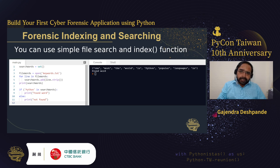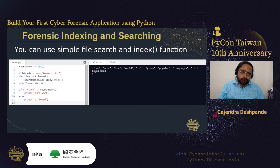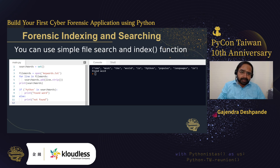The next topic is forensic indexing and searching. You can use a simple file search and index function. In the example, a variable called search_words is created as an empty set, then a file called keywords.txt is opened, and for every word in the file, empty spaces are removed. The search words are printed as a set, then we search whether 'python' is present in the search_words set — if present, 'word found' is printed, otherwise 'not found'. This simple application's extended version can be used to find relevant information in forensic applications.